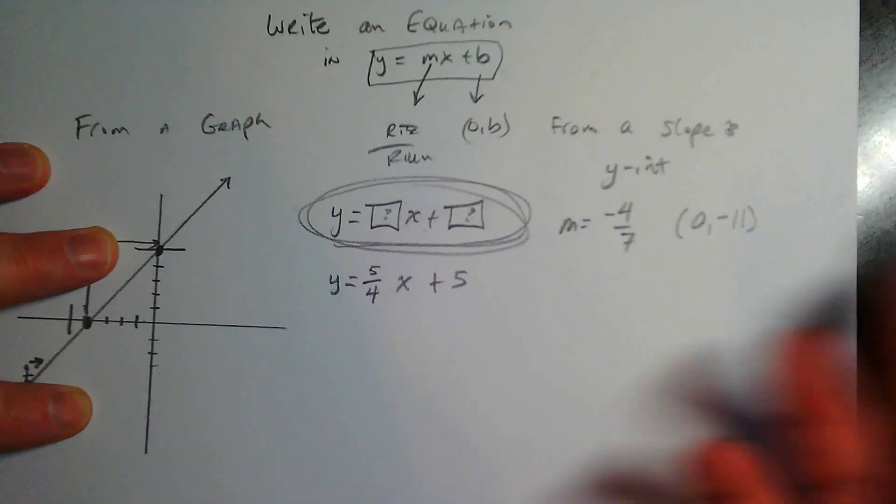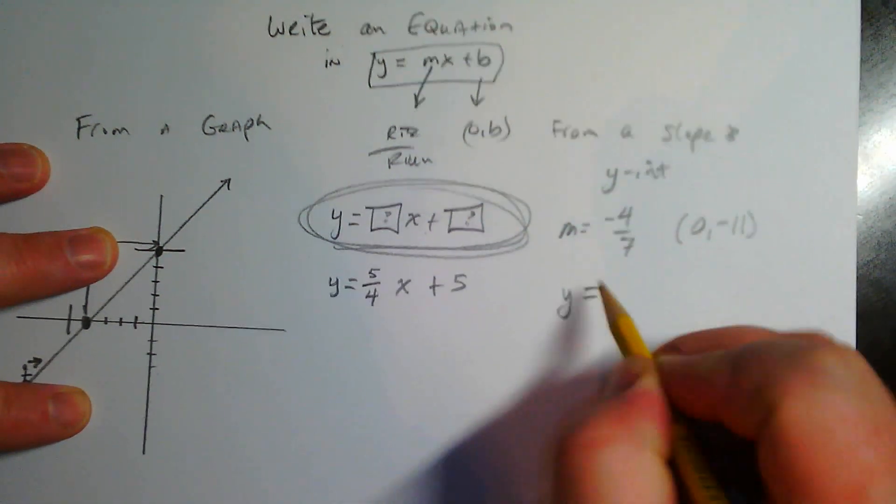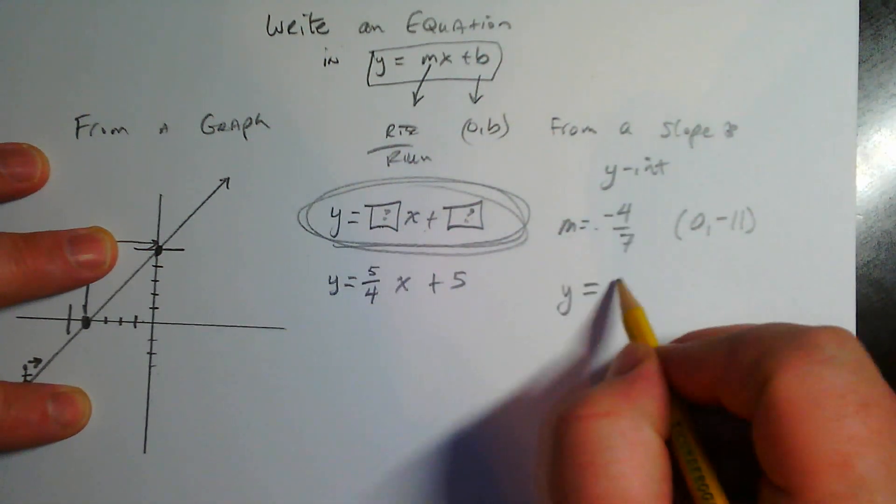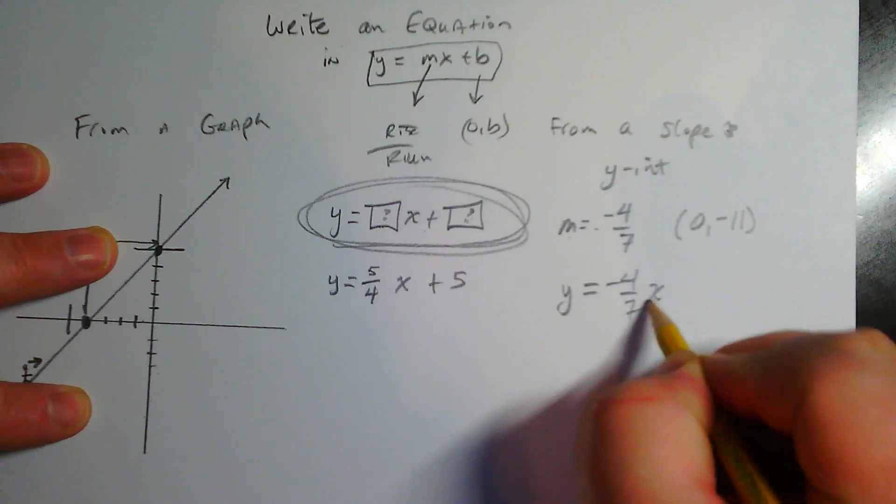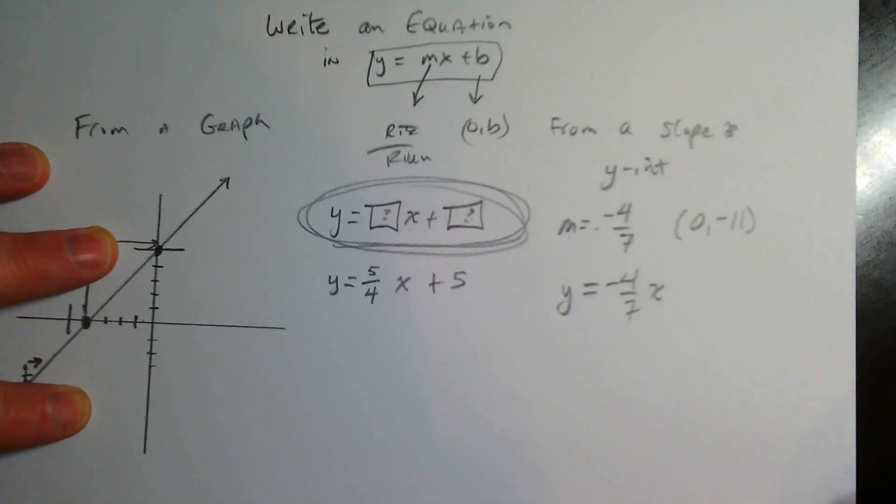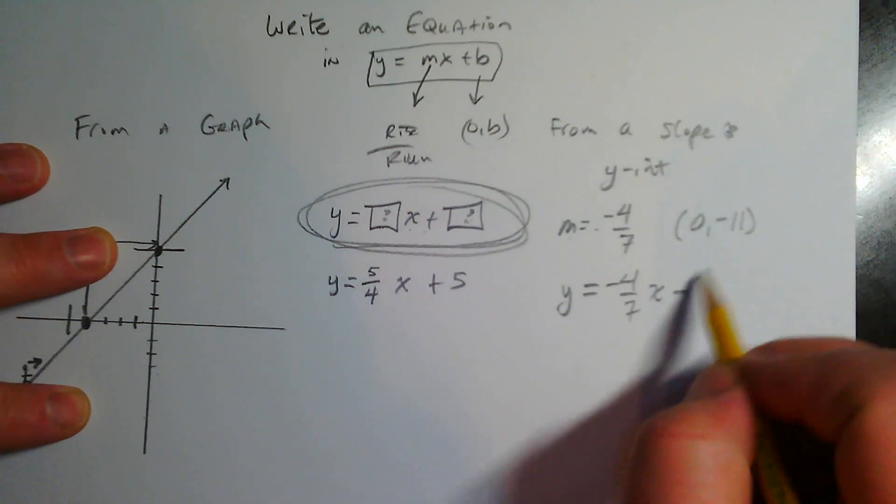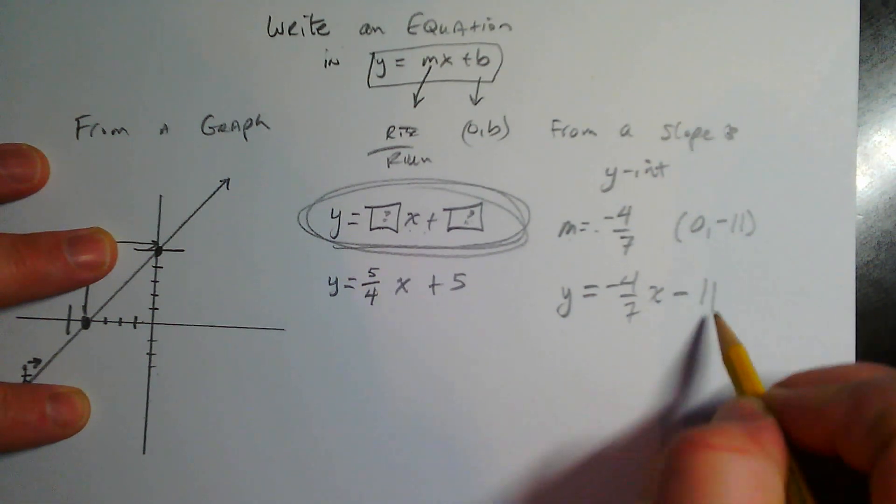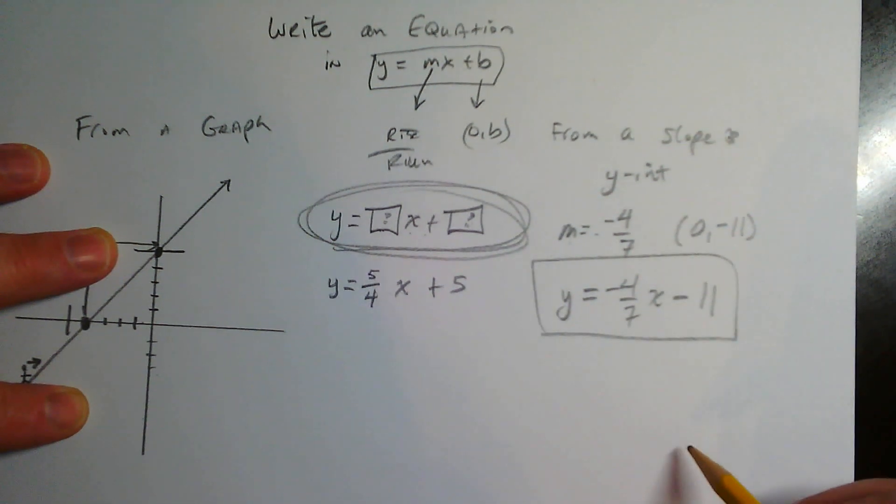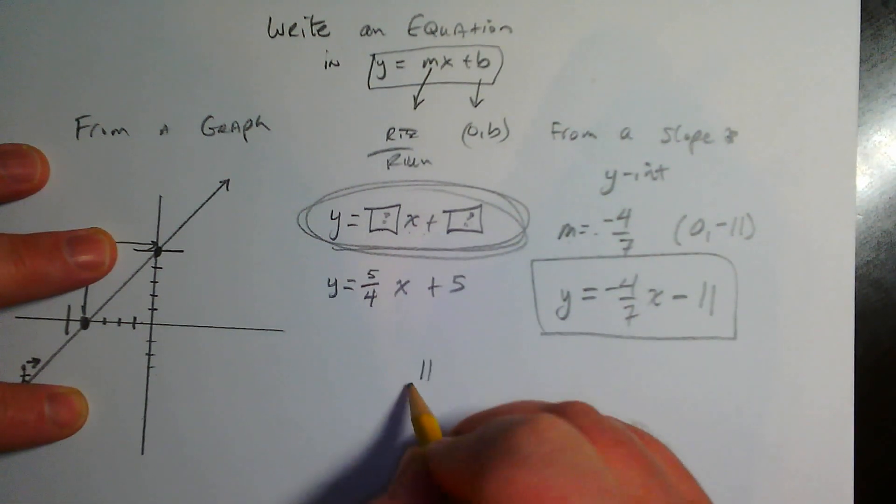...one you do first. We have them both here, so let's just go ahead and do it. Y equals m - well it tells us here m is negative four-sevenths x... and then plus or minus - here we have a negative, right? We have a negative y-intercept, so we're going to put a minus there: 11. And we're done: y equals negative four-sevenths x minus 11. Fantastic!